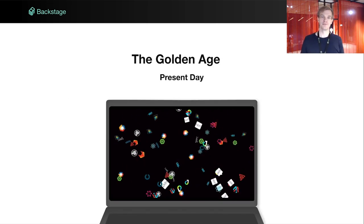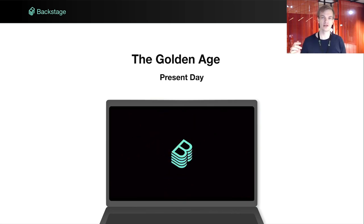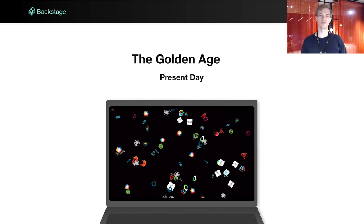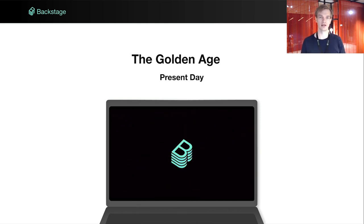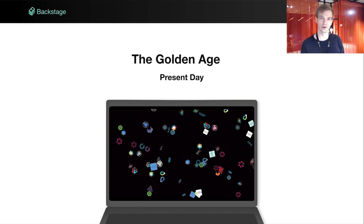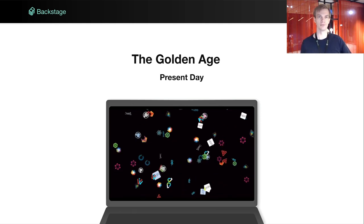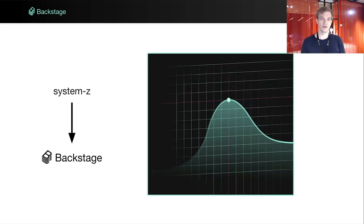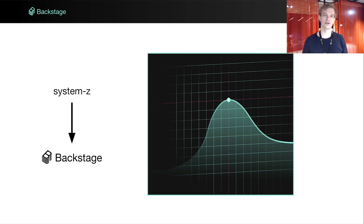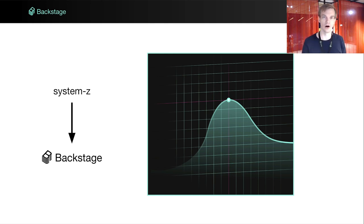And so we entered the golden age. We saw a soar of new plugins entering Backstage. The introduction of TechDocs made it easy to write and find documentation. Tech Insights brought tracking of fleet-wide migration efforts, and cost insights started suggesting ways to improve your cloud spend. All of these plugins and many more were developed without much interaction from the Backstage core team. One of the metrics we use to measure productivity at Spotify is onboarding time of new engineers — specifically, the time it takes for an engineer to send their 10th pull request. This metric had been increasing steadily, but in the years after introducing Backstage, we were able to cut our onboarding time in half.